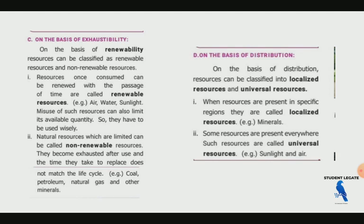On the basis of distribution, resources can be classified into localized resources and universal resources. When resources are present in a specific region they are called localized resources — for example, iron ore found in the Chhota Nagpur region. Some resources are present everywhere; such resources are called universal resources — for example, sunlight and air.